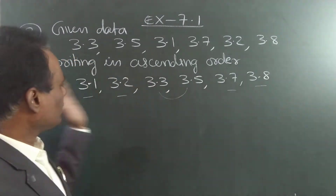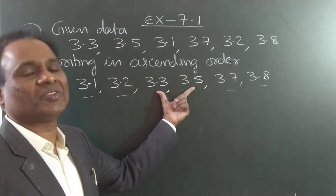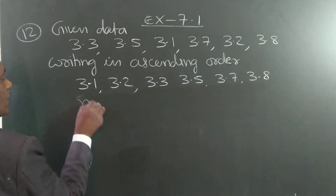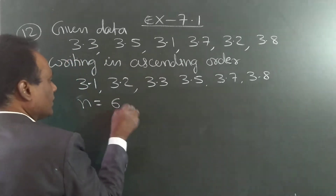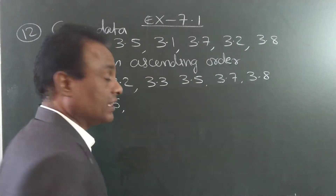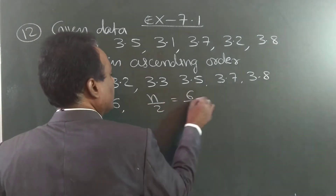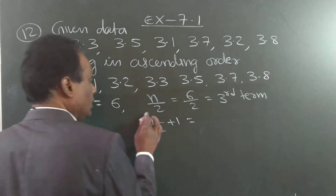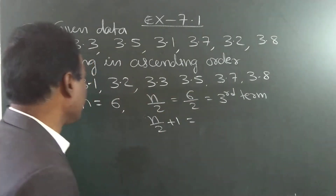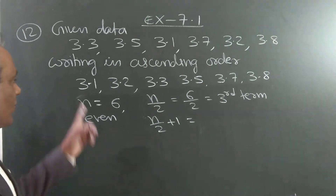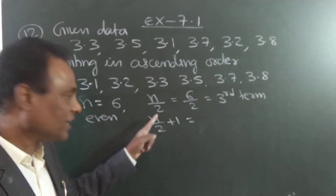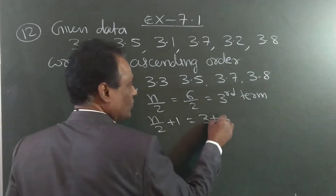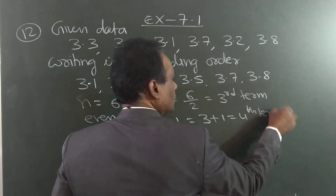I also gave a rule. How many numbers are there? 6 numbers. Then find n by 2: 6 by 2 — that is the third term. Next, n by 2 plus 1. When the number of terms is even, find the n/2 term and the n/2 + 1 term. n/2 is 6/2 = 3. So n/2 + 1 = 3 + 1 = 4.